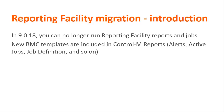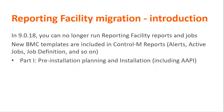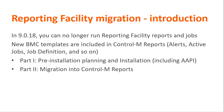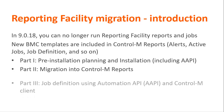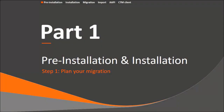Control-M reporting facility migration is a three-part process. Part one: pre-installation planning and installation of Control-M EM version 9.18, including Control-M Automation API. Part two: migration of your old data and reports into Control-M reports. Part three: job definition — define a job using Automation API and then update the job in Control-M client using the command defined in Automation API.